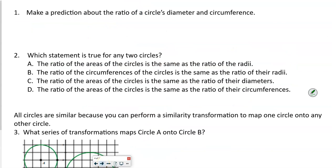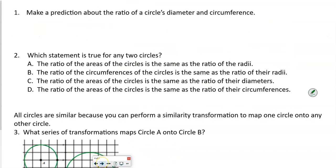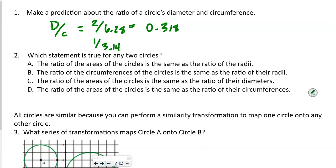Now it says: make a prediction about the ratio of the circle's diameter and circumference. Based on what we just saw, since dividing circumference by diameter gave us the same ratio every time, what do you think is going to happen when we divide diameter by circumference? We're going to get the same ratio again. So 2 over 6.28 equals 0.318, and if we did this for all values — like 1 over 3.14 — we'd also get 0.318. They all have the same ratio.